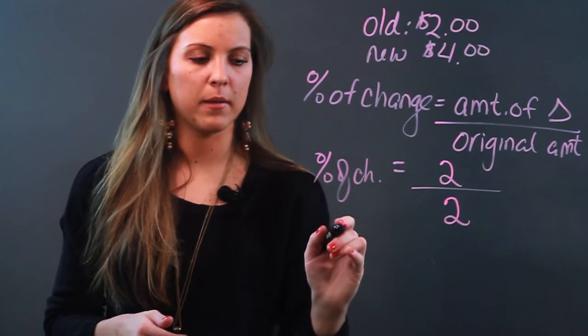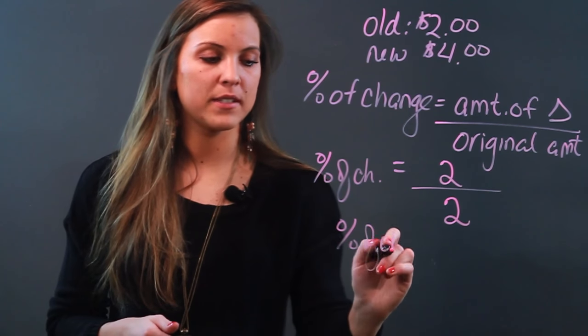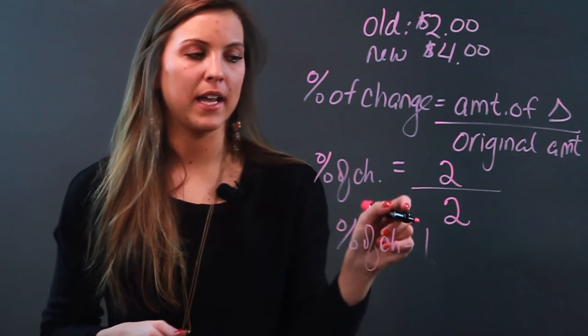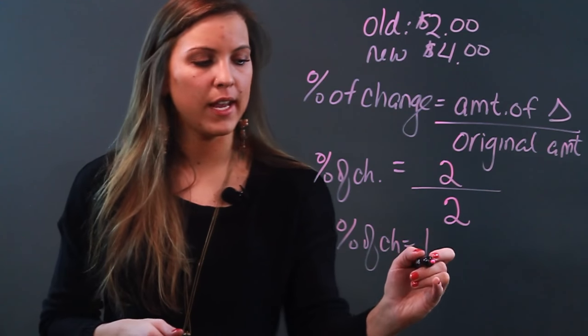Two divided by two is one, so my percent of change is one, but that's not a percent. I have to make this a percent by moving the decimal two spaces to the right.